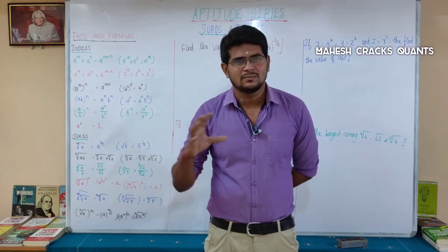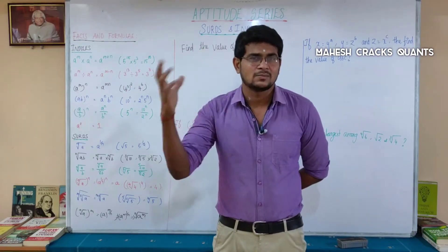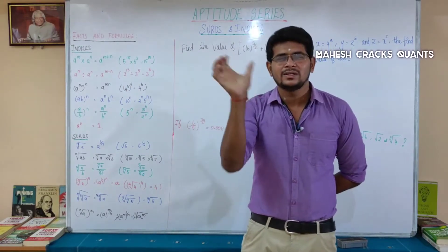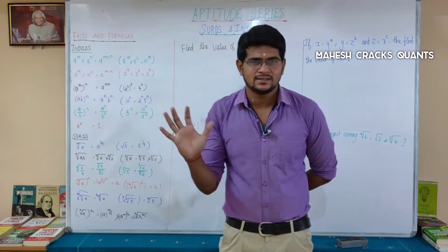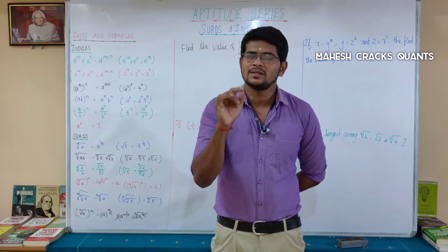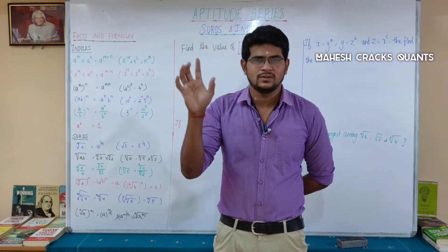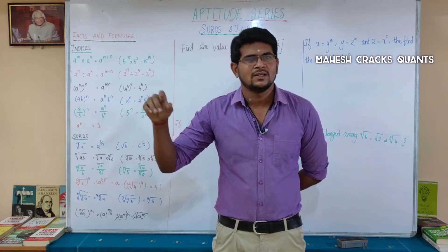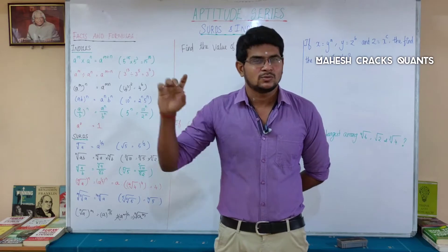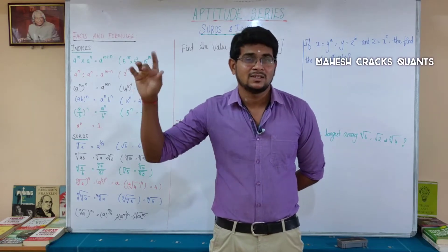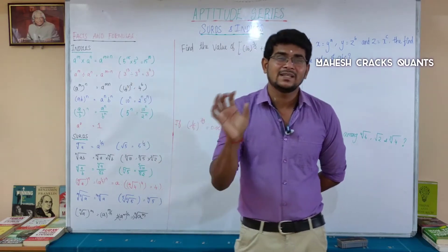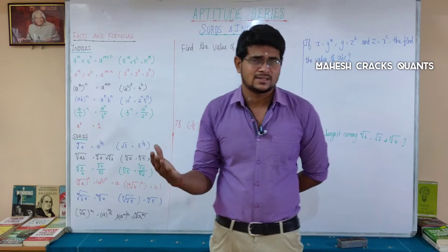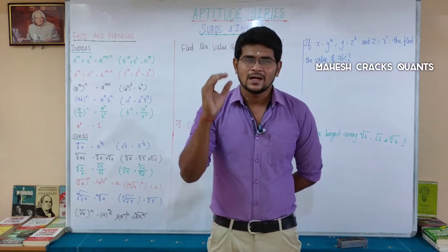Indices are the power values — Power Exponents. The power value is the Indices. For example, a power 5, 5 power 7, 12 power 13 — these are Indices.